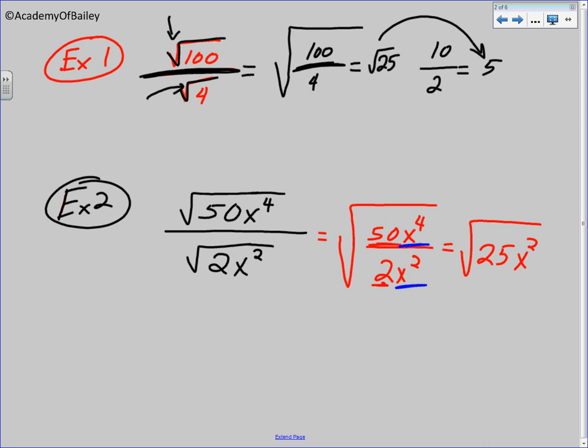And so therefore, the square root of 25 is 5, and the square root of x squared happens to be x. So you get 5x when you simplify what we started with there in example number two.